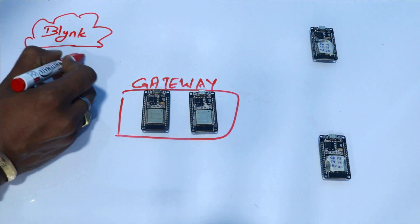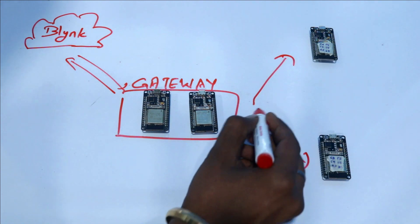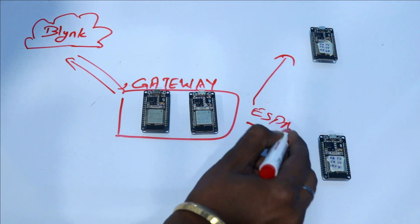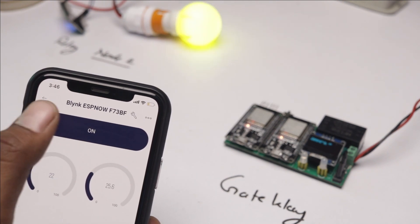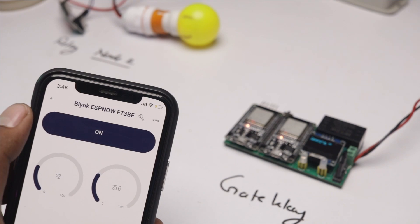In this video, we're going to learn how to make our own ESPNOW to Blynk Cloud gateway, using which you'll be able to send and receive data from Blynk Cloud to your ESP32, which you can further broadcast to all other ESPNOW connected devices. After learning about this gateway, we'll be implementing it by making a small demo project of controlling appliances and monitoring sensor data on Blynk Cloud, whose data will be coming via ESPNOW protocol.